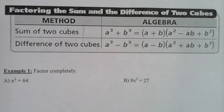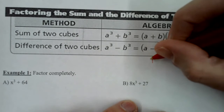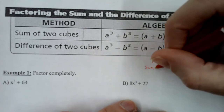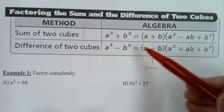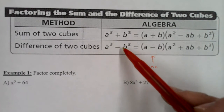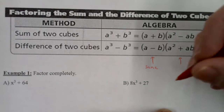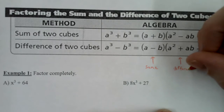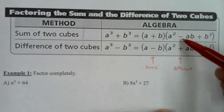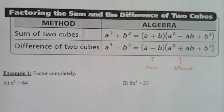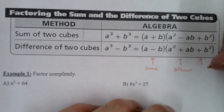The difference of two cubes: a³ − b³ equals (a − b)(a² + ab + b²). Here are the tricks to memorize these. The first sign is the same — so a³ + b³ gives (a + b), and a³ − b³ gives (a − b). The second sign is different — so for the sum, it's minus ab, and for the difference, it's plus ab. And the last term is always positive for both: plus b².